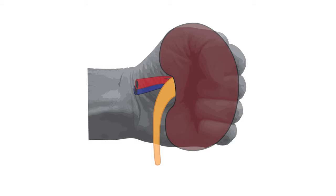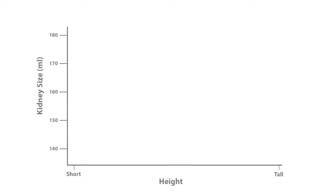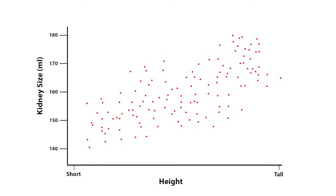In fact, if we compare kidney size with the height of the individual, we see that kidney size has a positive correlation with height. In other words, small people have smaller kidneys while larger people have larger kidneys.